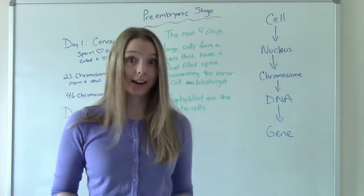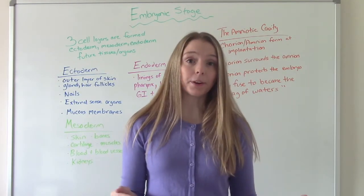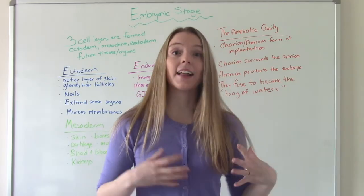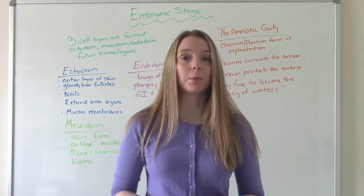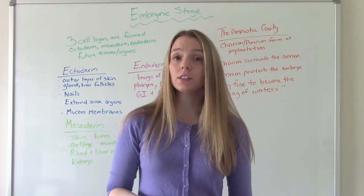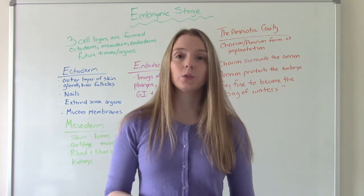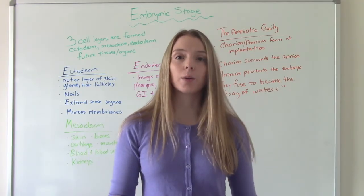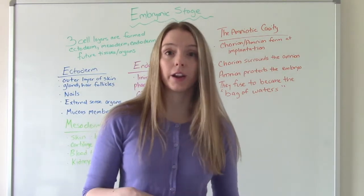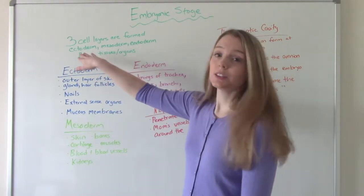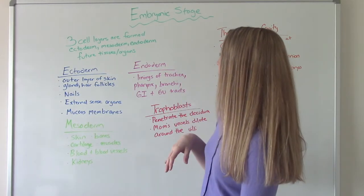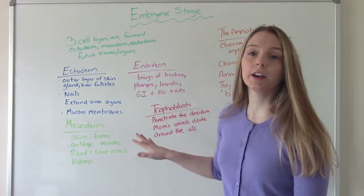Now let's jump into the embryonic stage. We've gone from a zygote and now we're talking about weeks two to eight — now we're an embryo. A lot is happening in this time; it's a very critical time in fetal development. This is when all of the organs and tissues are formed to some extent, and it's also when they're at the highest risk for being exposed to teratogens — things that are causing harm or death to the embryo.